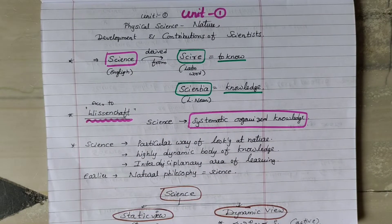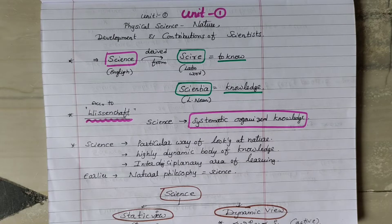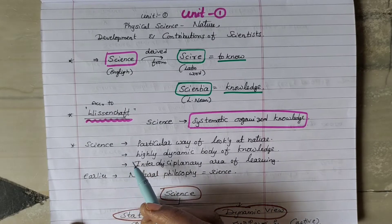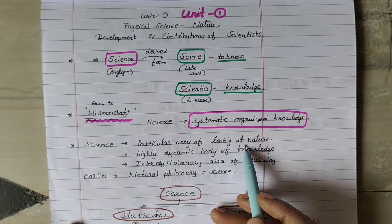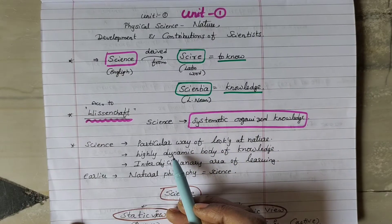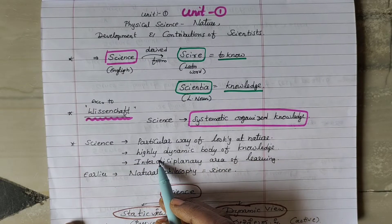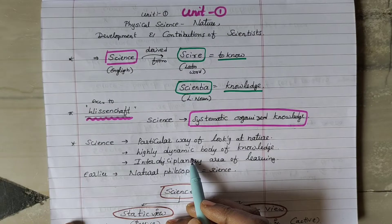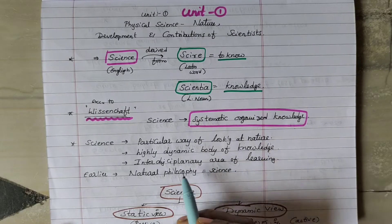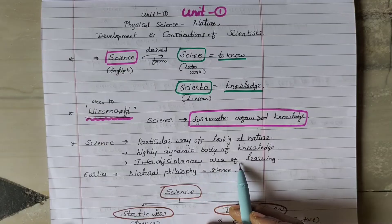Now I will try to explain it fast, because it is a very long topic. You can explain it in the comments as well. Please try to learn it fast — if you try to do it fast, you will do it two or three times. The definition of science is: a particular way of looking at nature; a highly dynamic body of knowledge; an interdisciplinary area of learning.